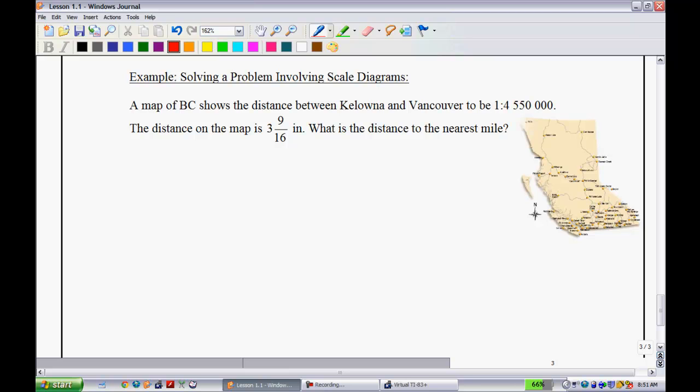So a map of BC shows the distance between Kelowna and Vancouver to be 1 to 4.55 million. The distance on the map is 3 and 9 sixteenth inches. What is the distance to the nearest mile?